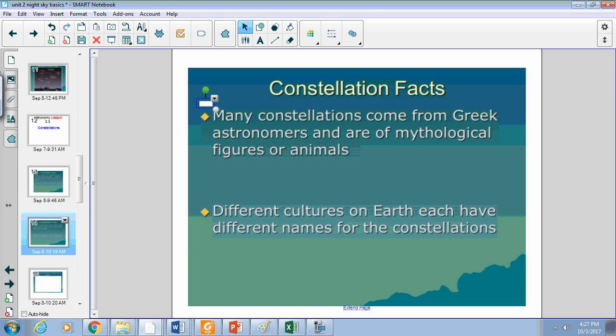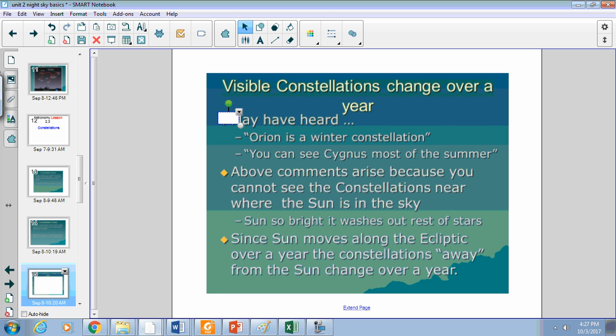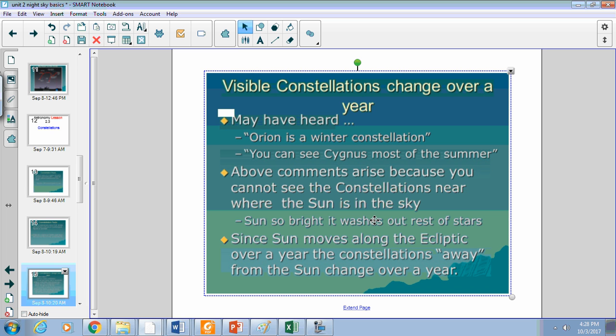The visible constellations that we see do vary because the Earth is revolving around the Sun, so we are seeing different parts of that night sky. Things like Orion is considered a winter constellation, and Cygnus is considered a summer constellation, which means that season-wise in the northern hemisphere, this is what you're going to be able to see.